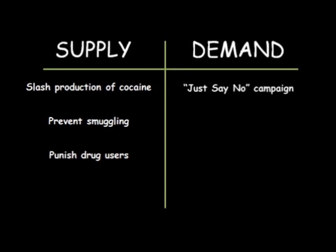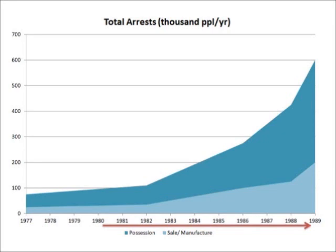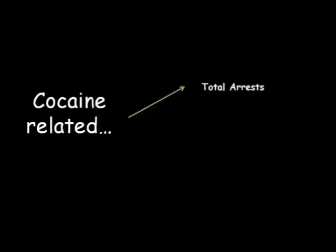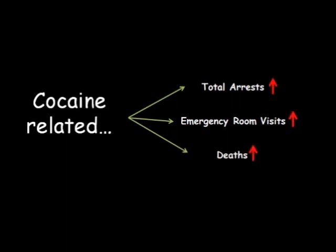On the demand side, however, they really just told kids just say no. So did government's policies of focusing on the supply side actually work in mitigating cocaine use? Data showed that arrests for possession and sale of cocaine went up. The number of cocaine-related emergency room visits went up. The number of cocaine-related deaths went up. Finally, the purity of cocaine went up and the price went down.